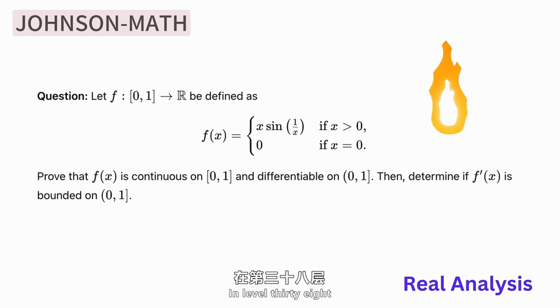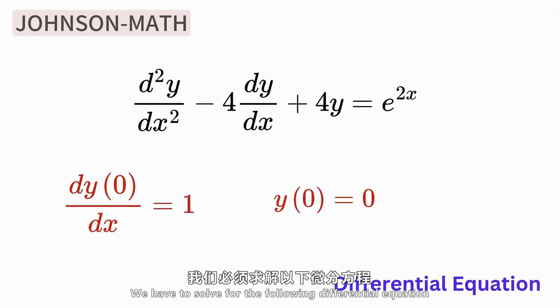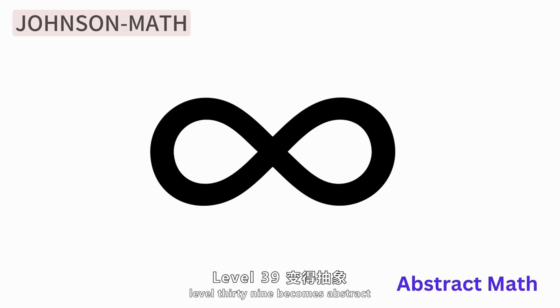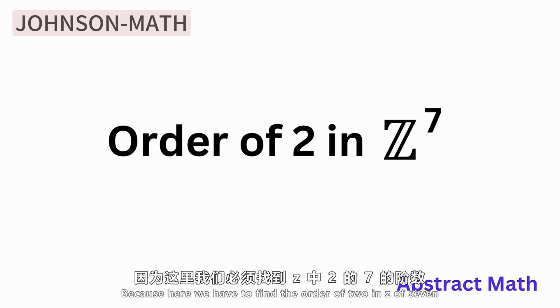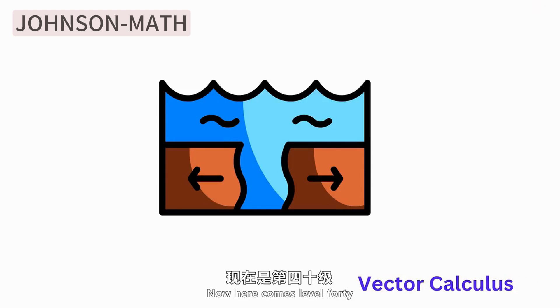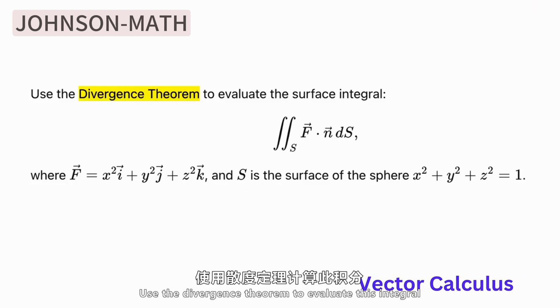Level 39 starts to get abstract because we need to find the order of 2 in the Z7 group. Now we are in Level 40. Use the divergence theorem to calculate this integral.